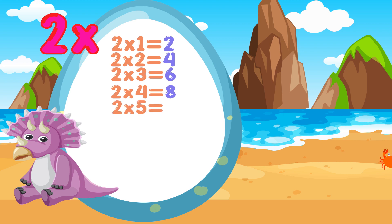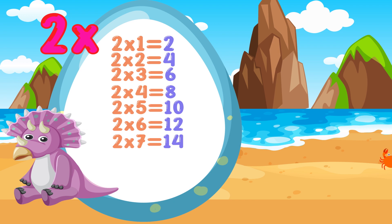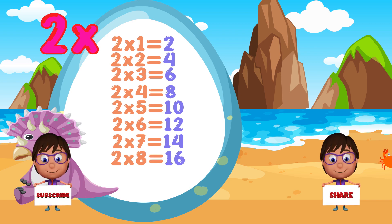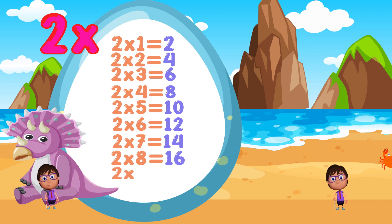2 times 5 is equal to 10. 2 times 6 is equal to 12. 2 times 7 is equal to 14. 2 times 8 is equal to 16. 2 times 9 is equal to 18.